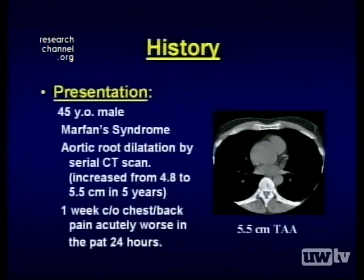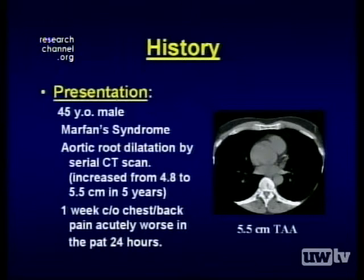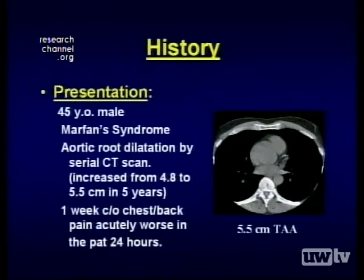This was followed by serial CT scans over several years, and three months prior to his presentation to our facility, he had a measurement of 4.8 centimeters in diameter of his aortic root. Three months prior he was doing well, and then one week prior to coming to our attention at the hospital, he had a complaint of chest and back pain, which had become acutely worse in the 24 hours prior to his admission. This was associated with an increase of his aortic root from 4.8 centimeters to 5.5 centimeters in diameter, and now there was an associated aortic dissection.